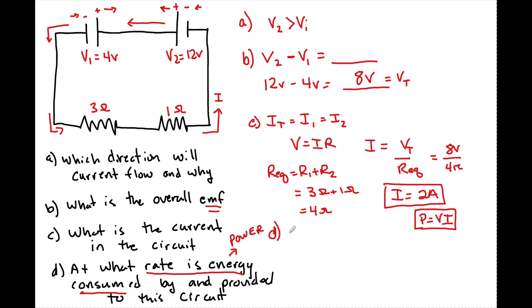So at V2, V2 is going to provide energy at P equals V2I. So that's going to be equal to 12 volts times 2 amps. Sorry, let me put the units. So that's going to be 24 watts. All right. Now that is provided. So that's given to the circuit.